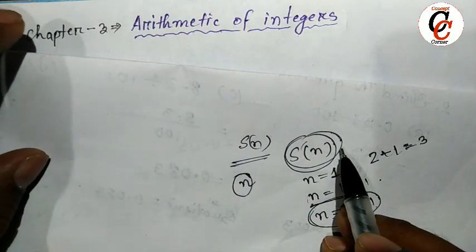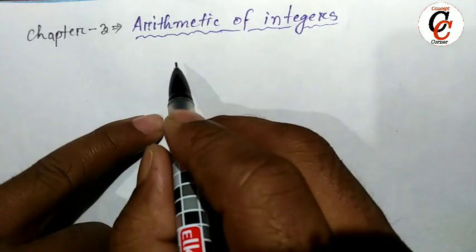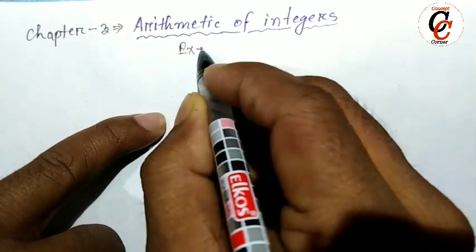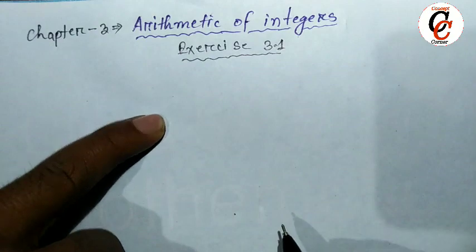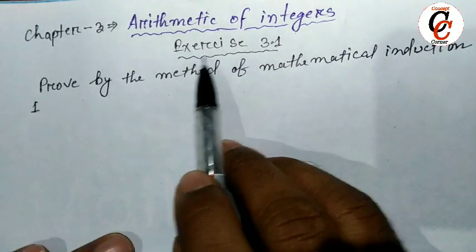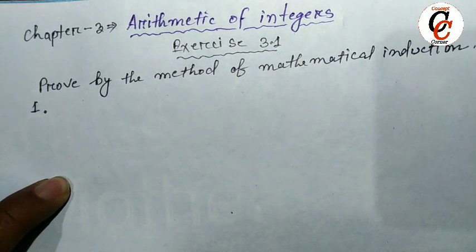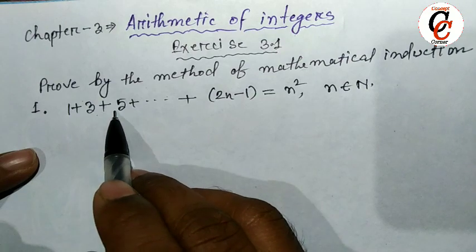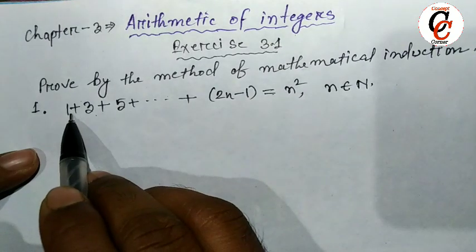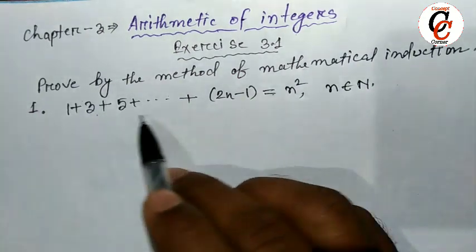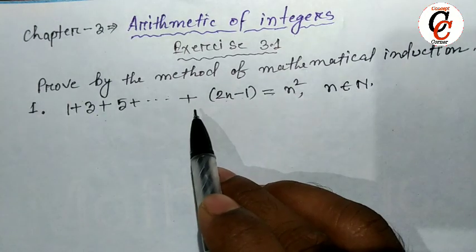We will start by solving a sum so your concept will be clear. Let's start exercise 3.1 of your book. In exercise 3.1 we have to prove by the method of mathematical induction. The first question is: 1 plus 3 plus 5 plus dot dot dot up to (2n minus 1) is equal to n squared. That means the sum of n odd natural numbers is n squared, where (2n minus 1) is the common term of this series.